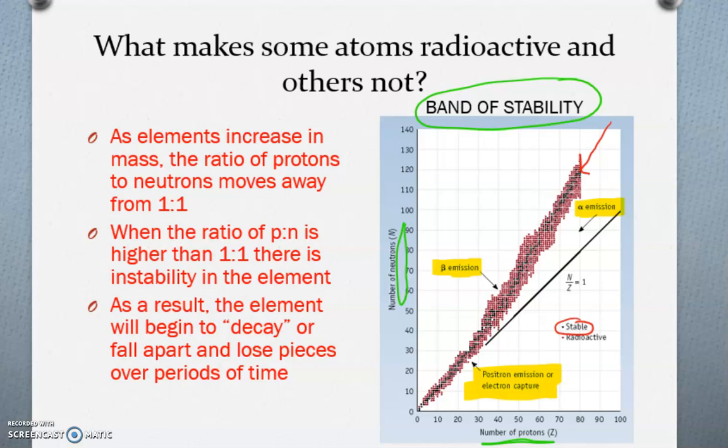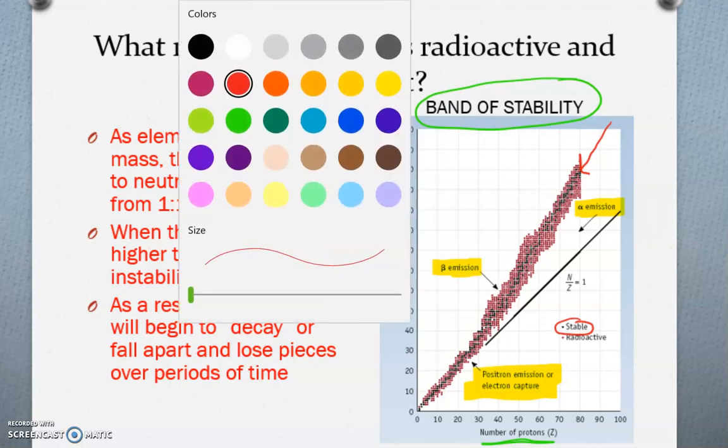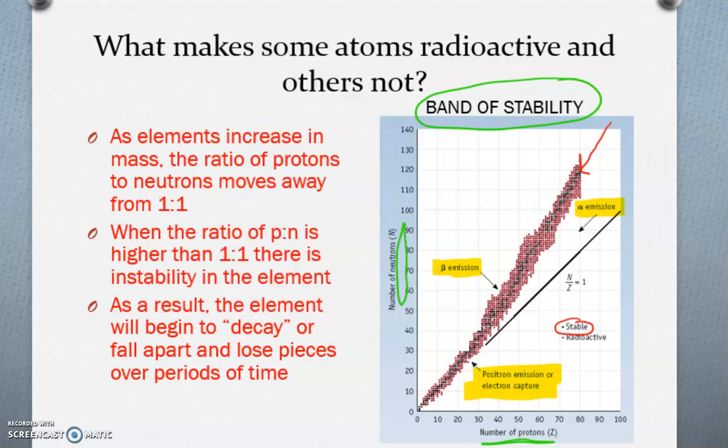Okay? So all of those elements in black have as close to a 1 to 1 ratio of their protons and neutrons as possible. Now, if you start getting outside of that band of stability and you're, let's say, way out here or you're in this red zone, you're considered radioactive, which means you don't have a 1 to 1 ratio of protons to neutrons. And you're going to start to radioactively decay.